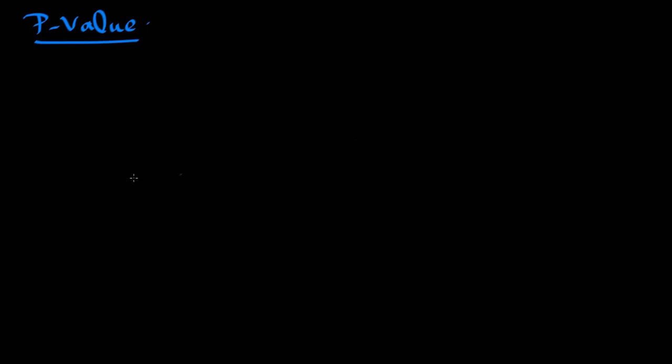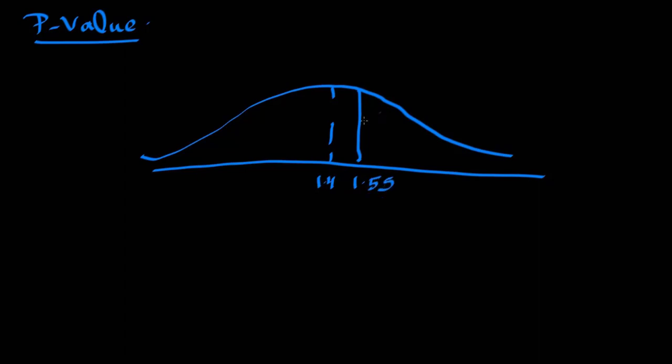In simple words, in this normal distribution here, what is the probability or what is the P-value? Let's say the mean is here at 1.4 meters and this is 1.55 meters. What is the P-value of an element falling at this place? What will you do?